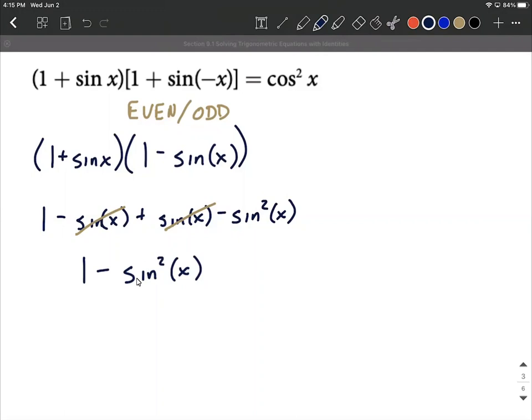So where we're at now is we still have 1 minus sine squared of x. You may notice whenever we have a square, it's not a bad idea to bring up the Pythagorean identity.